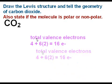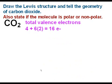First thing that we always need to do when we're drawing these Lewis structures is to find the total number of valence electrons. In this case, we have four valence electrons from the carbon and six from each oxygen. That gives us a grand total of 16 electrons.